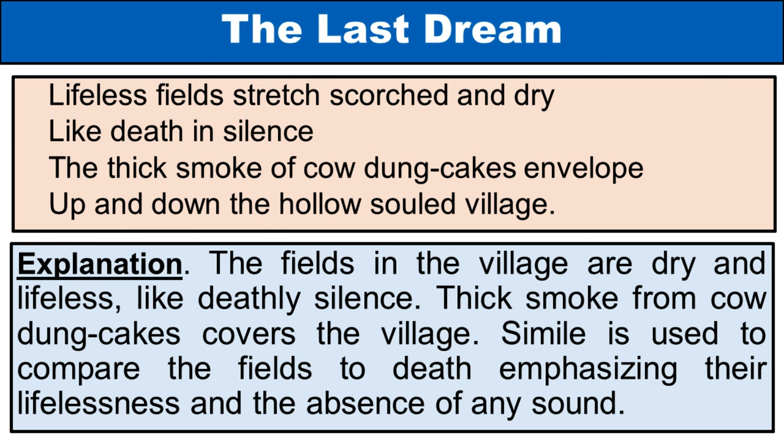Vyakhya: Gaav ke khetón ko mrityu se tulna karne ke liye upma ka upayog kiya jaata hai. Gobar ke uplon ka ghana dhuwan gaav mein chha jaata hai. Sahityik device: Upma ka upayog khetón ki mrityu se tulna karne ke liye kiya jaata hai. Gobar se bane uplon ka ghana dhuwan aavriti roop mein darshaya gaya hai. 'Khokhi aatma waala gaav' prateekaatmak roop se gaav ko aatma ki kami ke roop mein chitrit karta hai, jo uske dainyapan par zor deta hai.